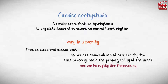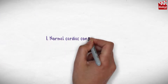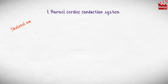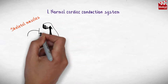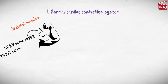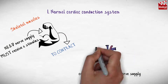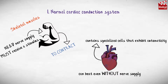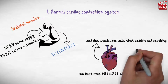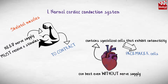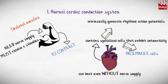To understand what happens in cardiac arrhythmias, we should first know the normal cardiac conduction system. Skeletal muscles need nerve supply and must receive a stimulus to contract. In contrast, the heart can beat even without nerve supply. It contains specialized cells that exhibit automaticity, called pacemaker cells. They intrinsically generate rhythmic action potentials in the absence of external stimuli.